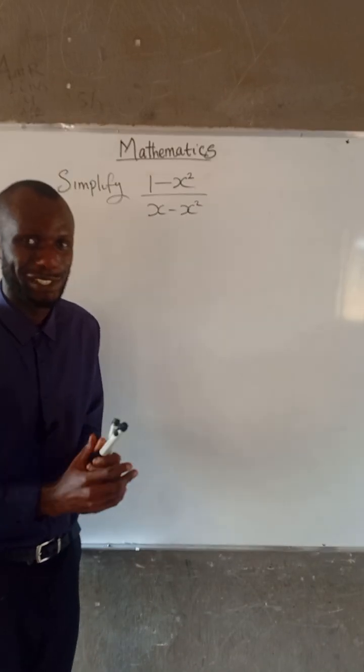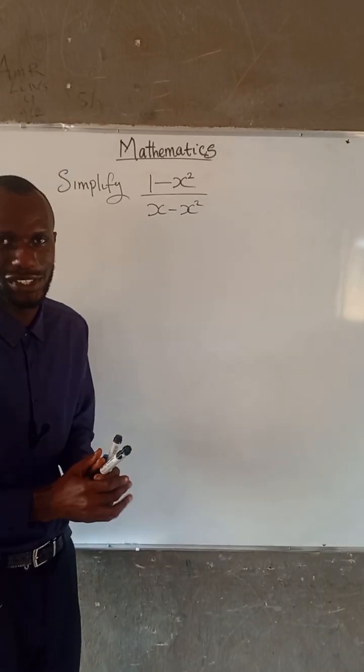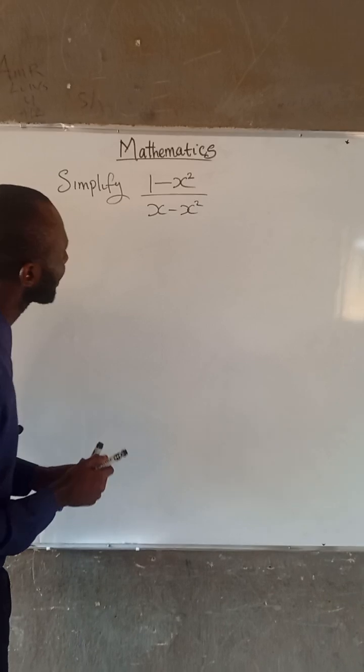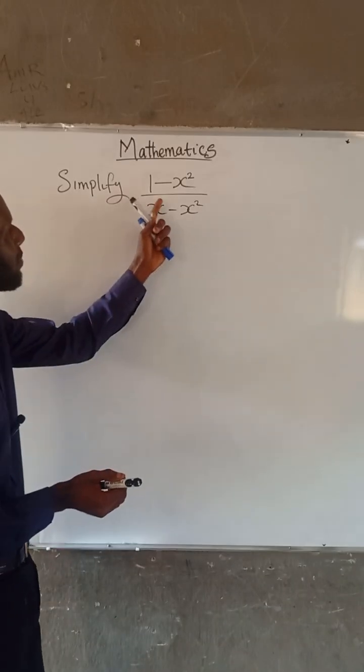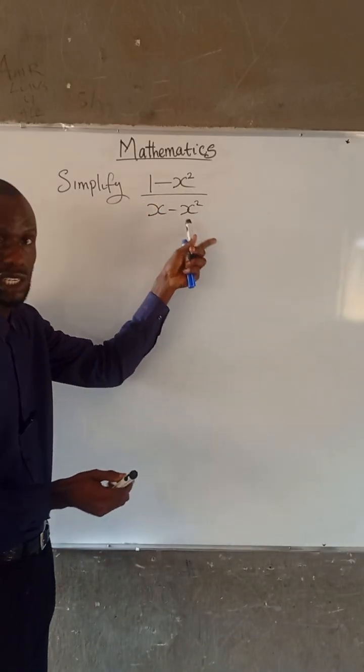Hello everyone, let us simplify this simple fraction given to us. Now look at this, we have simplified 1 minus x squared divided by x minus x squared.